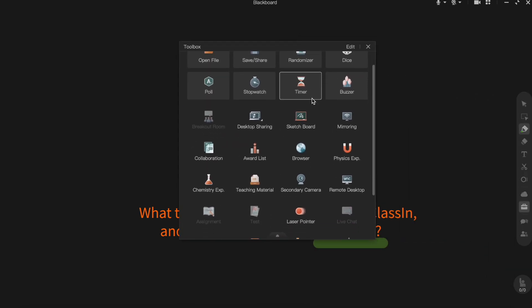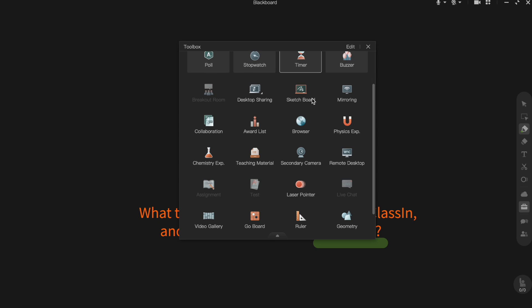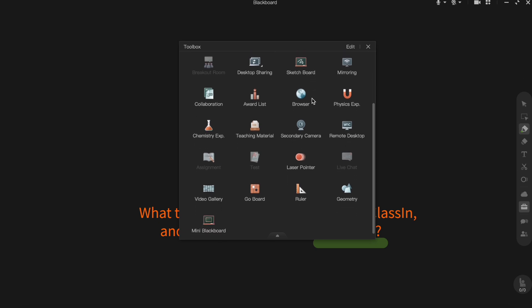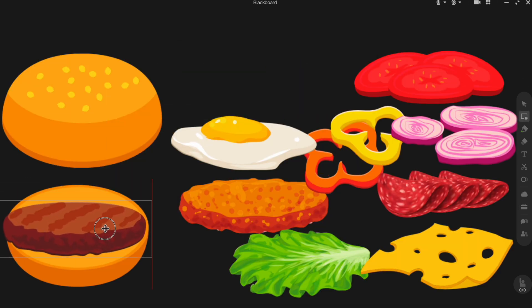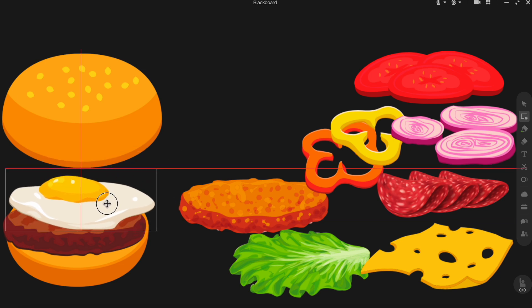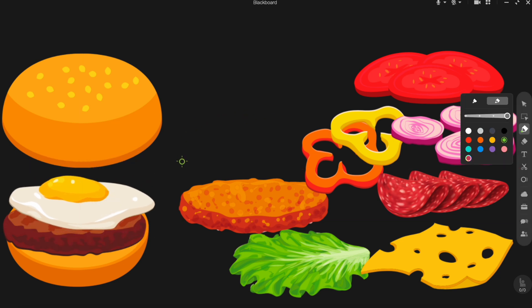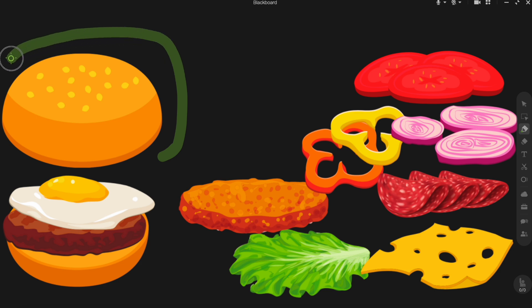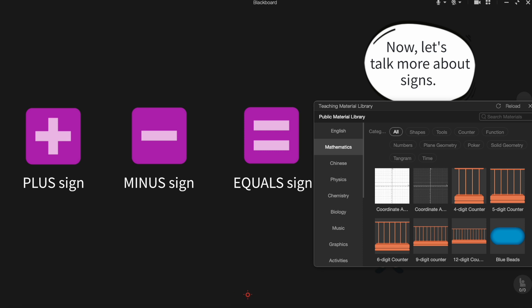Some of the standout tools include the interactive blackboard, screen sharing, polls and breakout rooms. The interactive blackboard is a game changer because it allows you to draw, write and upload teaching materials directly during the lesson. You can use different brush styles, colors and even shapes to make your lessons more engaging. For example, if you're teaching math, you can draw diagrams or use preloaded graphics from the teaching material library.